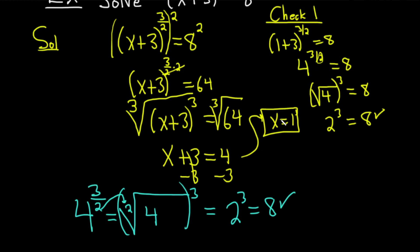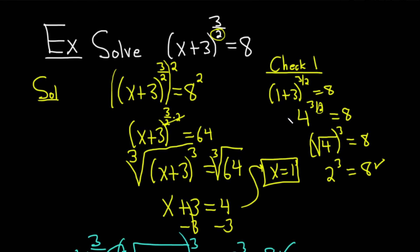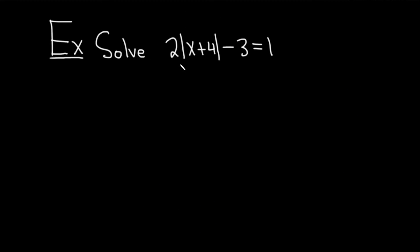All right, let's do an example of an absolute value equation. Solve 2 times the absolute value of x plus 4 minus 3 equals 1. Let's go ahead and work through this solution. So whenever you have absolute value equations, the first step is to basically solve for the absolute value.